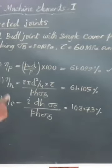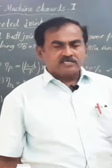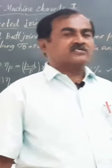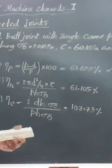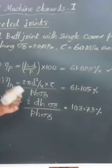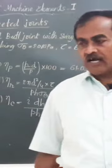Coming to the mode of failure, it is very obvious: since eta P is the least value, the mode of failure of the joint is by tearing of the plate. Dear friends, I thank you